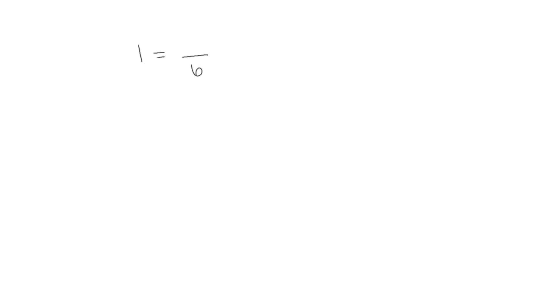Let's think about the whole number one, and how many sixths would be equal to one. We know if the whole is divided into six pieces, and we have all six pieces, that would be equal to one. So if we know that, how many sixths would be one half? Well, if six sixths is the whole, then half of that would be three sixths.